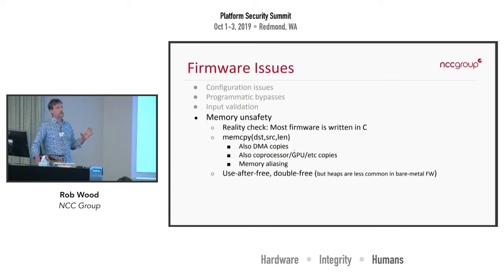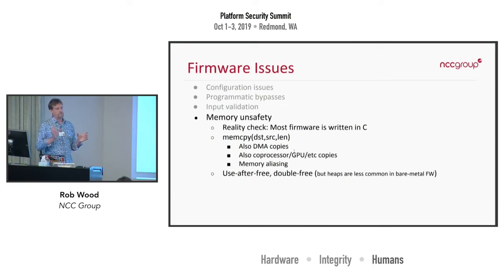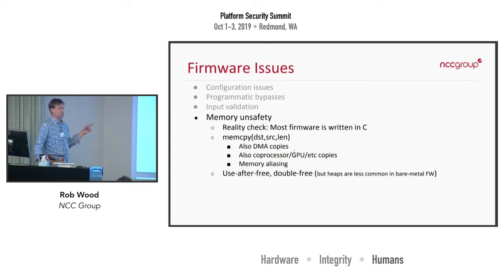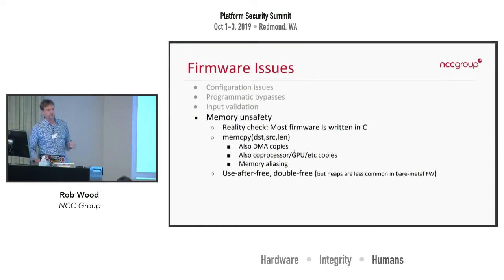Memory aliasing: sometimes the same physical memory appears multiple times in your address space. If they have different access permissions, I might be able to write to that memory by going through one address and then manipulate the values at the other address where I don't have permissions. Sometimes we can cause this maliciously by grounding an address line and forcing data to appear somewhere else.